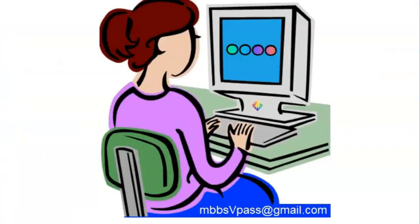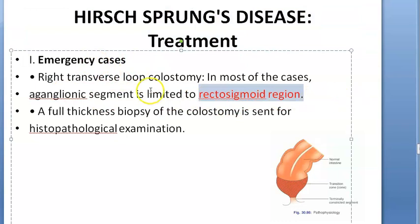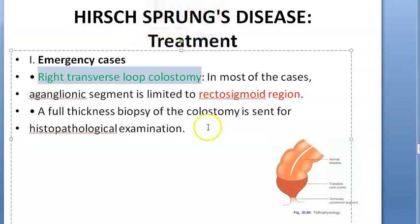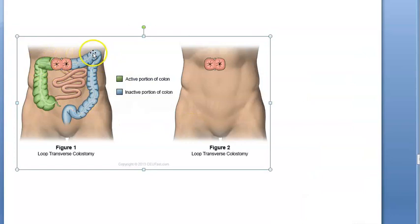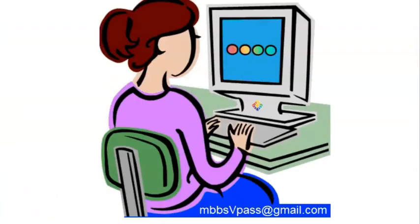For treatment, in an emergency — especially when the rectosigmoid segment is affected — a right transverse loop colostomy is performed. This is done to allow fecal matter to exit without removing any part of the aganglionic segment yet.